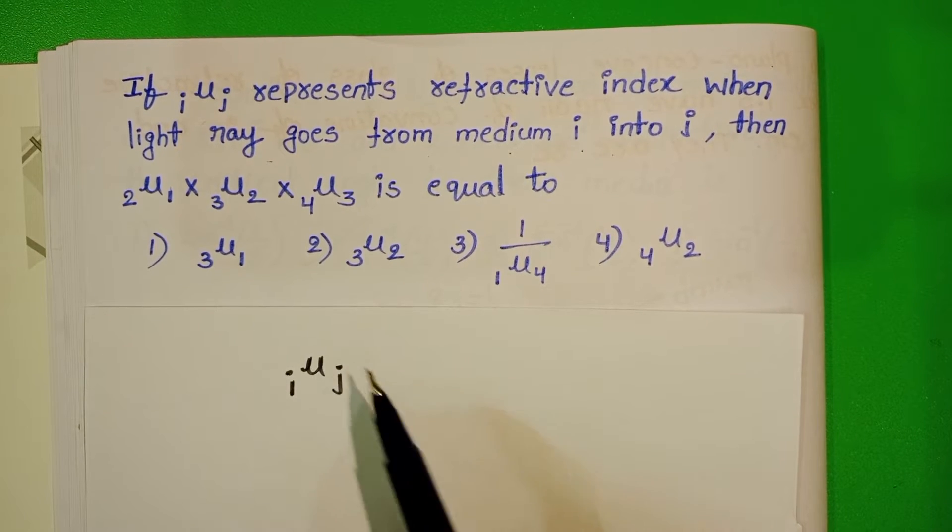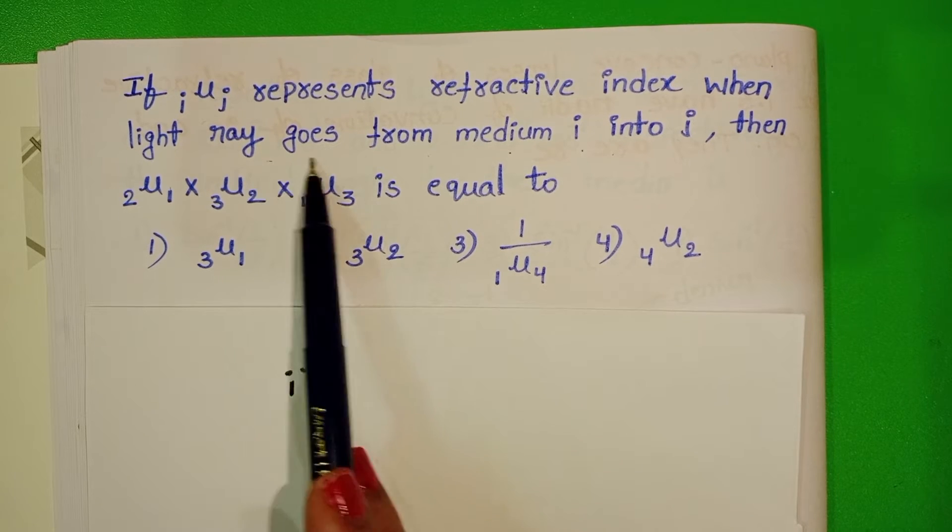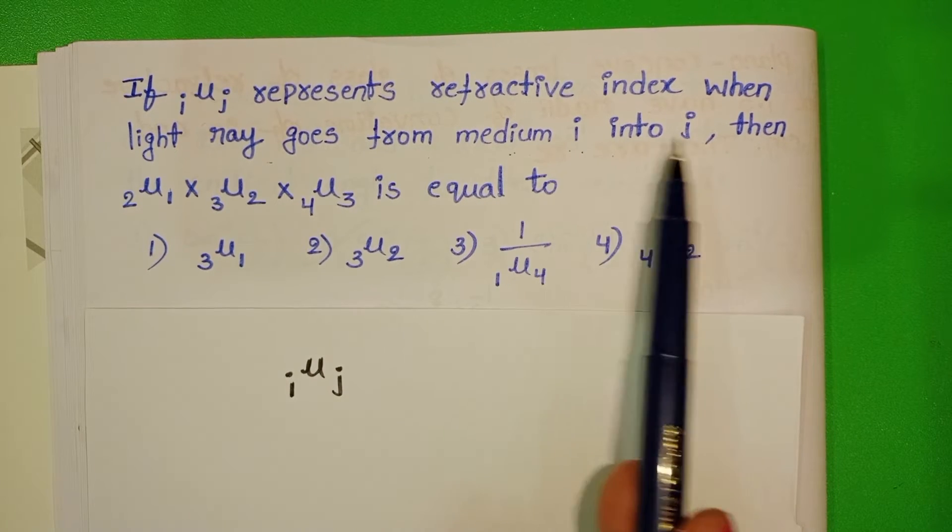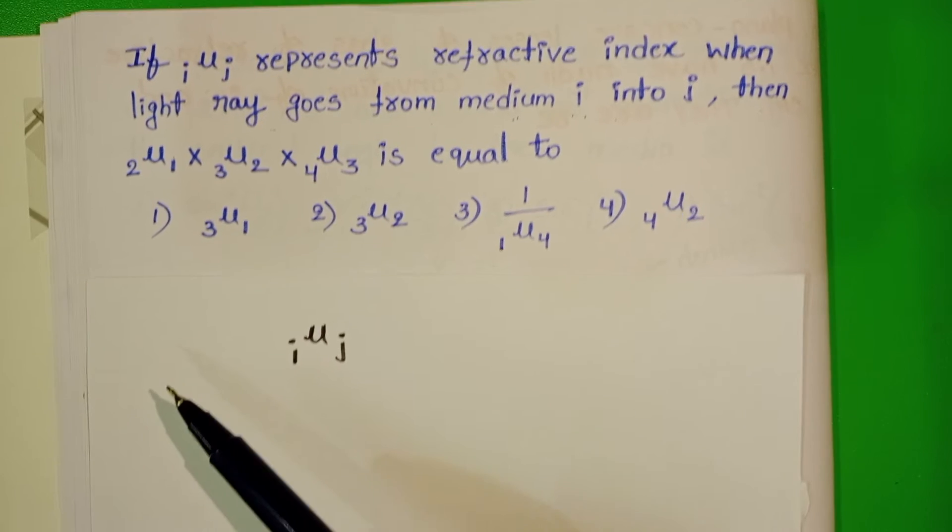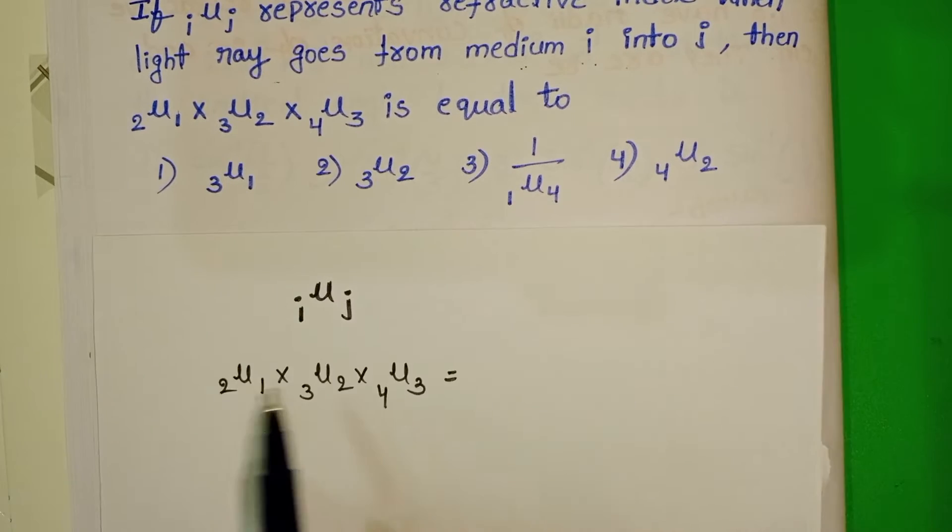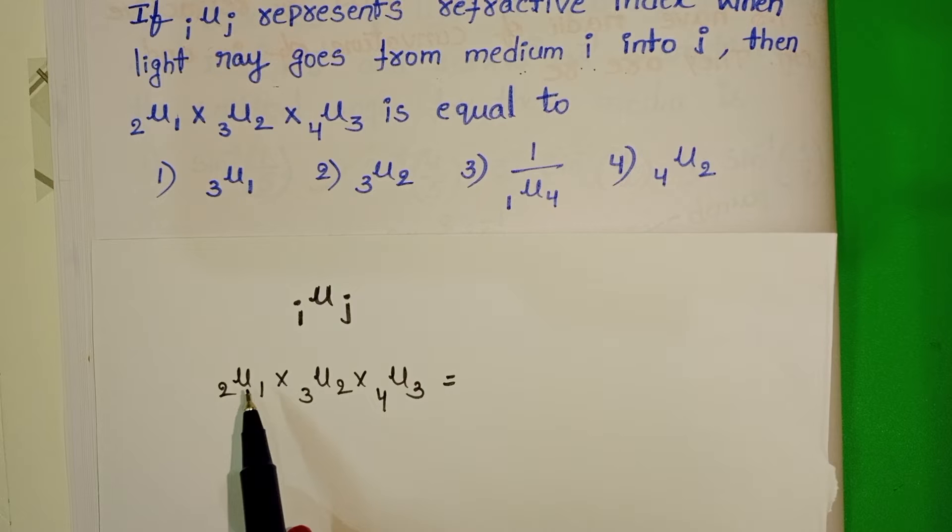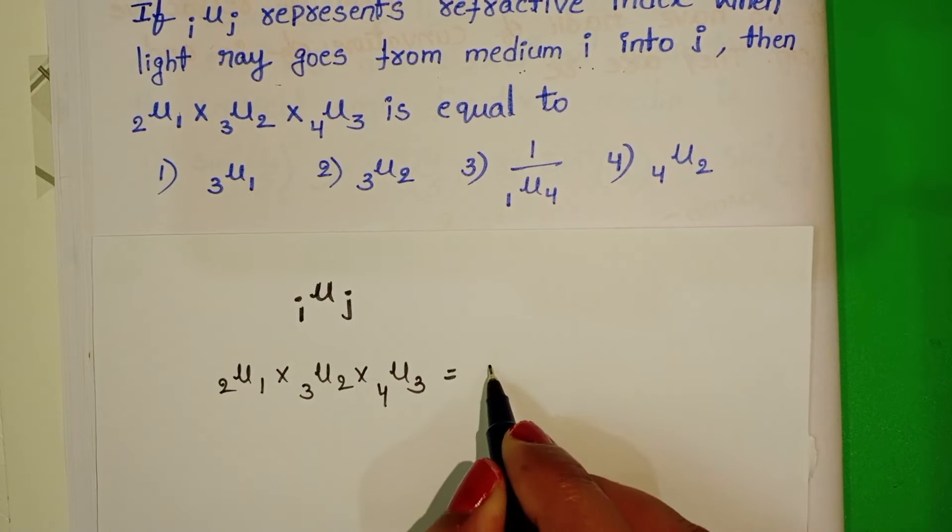Here this represents light ray goes from medium i into medium j. Then we have to find out mu 12, refractive index of first medium to the second medium.